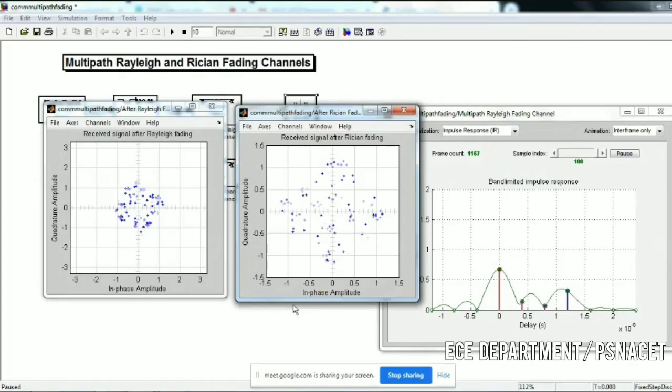This is how we have to generate with a simple Simulink code. With the help of any bit source, pass through the QPSK modulator. The channel may be selected.